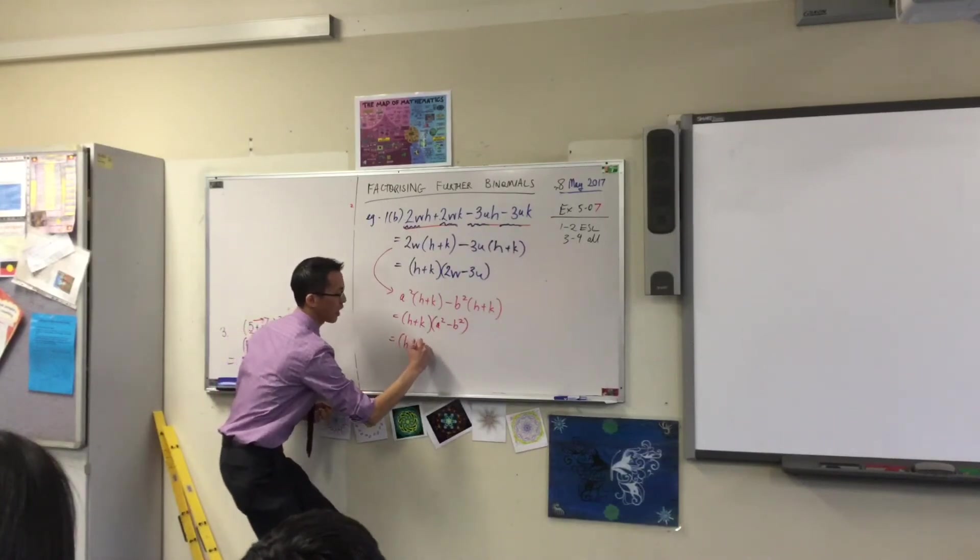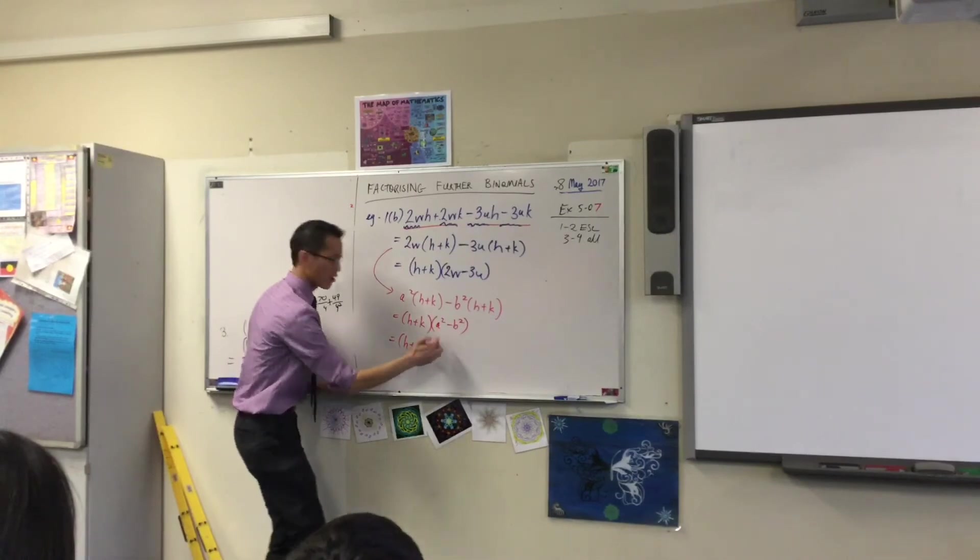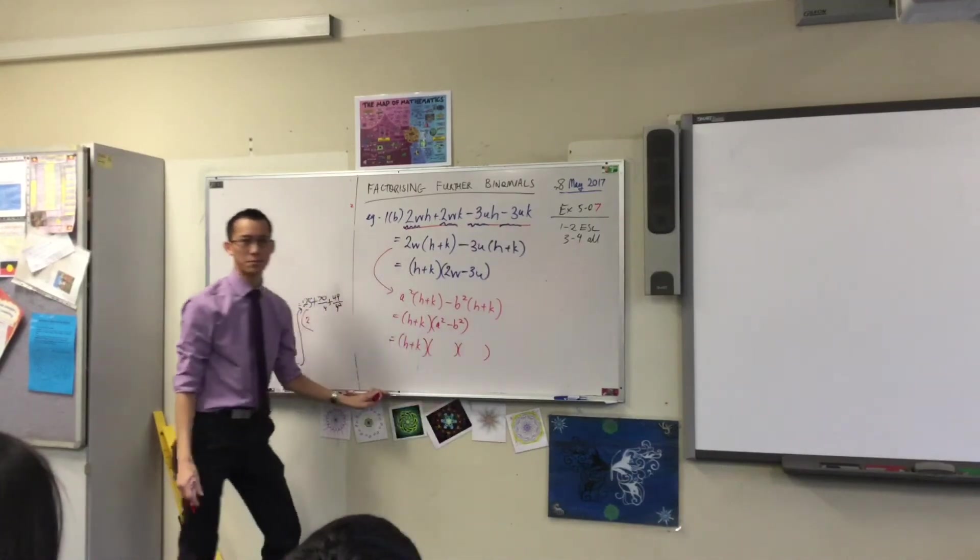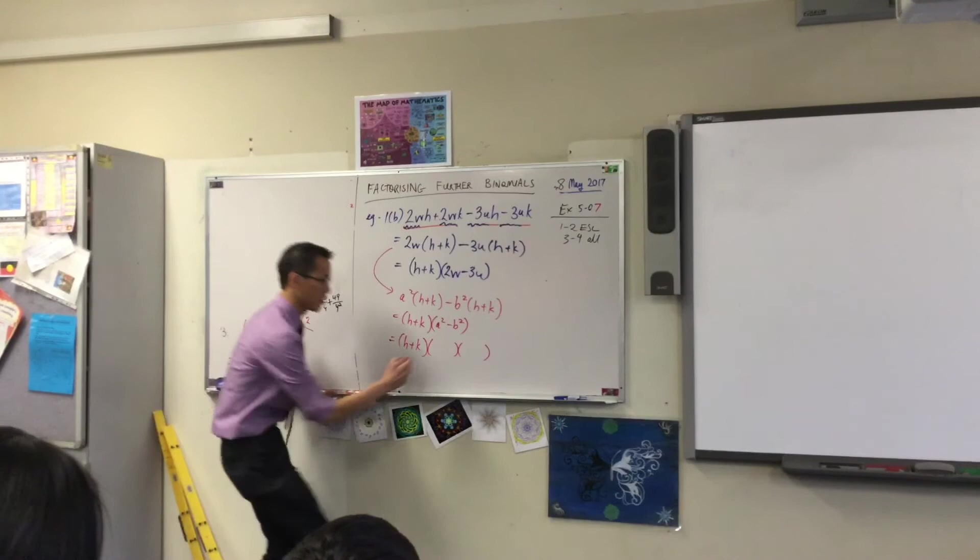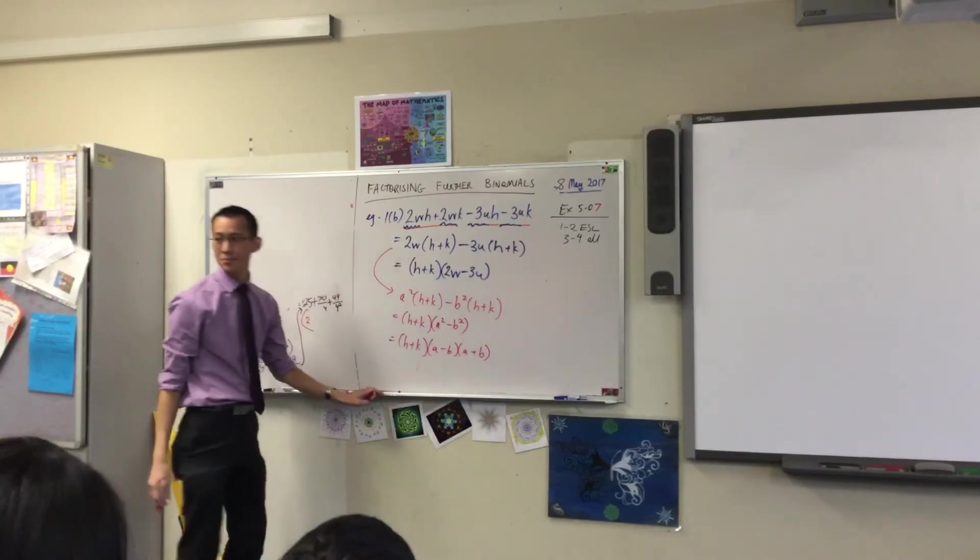The H plus K, they're just going to hang out the front. You don't need to do anything else to that. But this guy, you can write factorized even further. Does that make sense? This is A minus B, A plus B. Why?